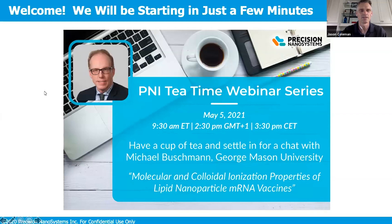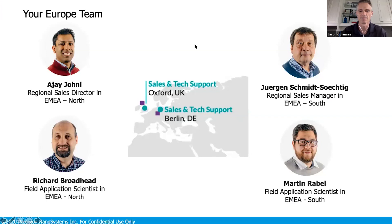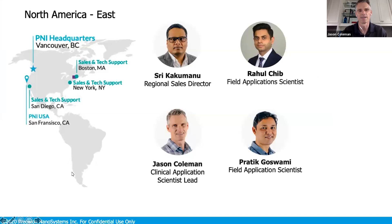Just to start, I want to introduce your regional support teams. That includes your European team: A.J. John, Juergen Schmidt, Richard Broadband, and Martin Rebel. And since we're taking part in the Tea Time series here in the U.S., this includes myself and your North American East team: Sri Kakamonu, Rahul Chid, myself Jason Coleman, and Pratik Goswami.